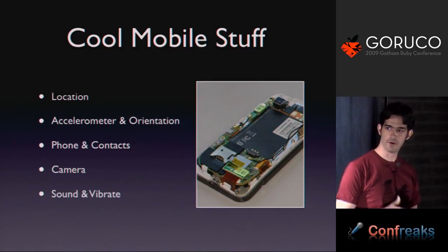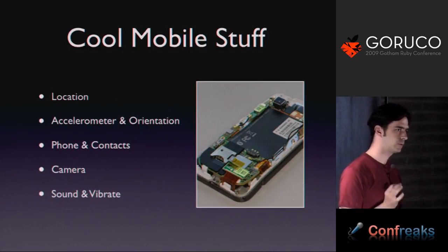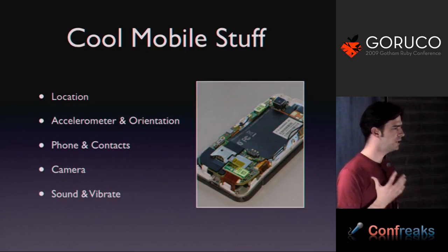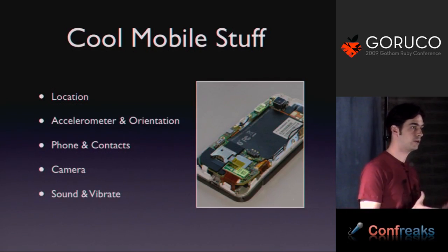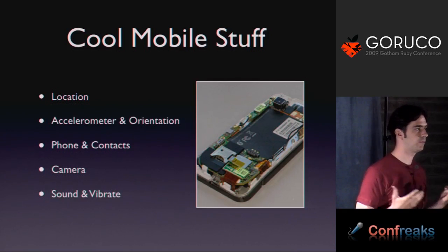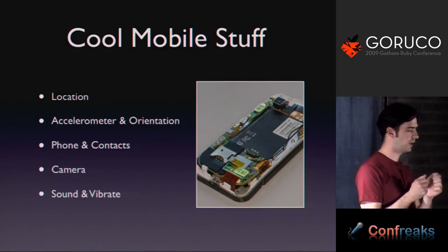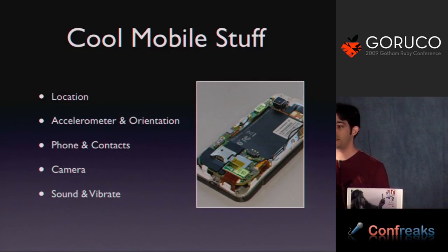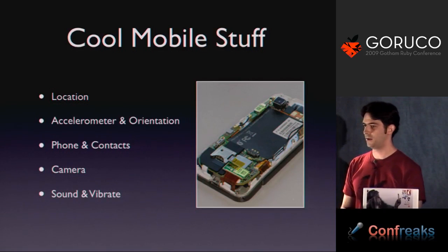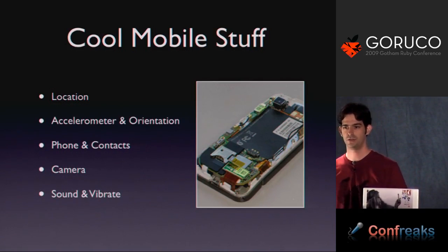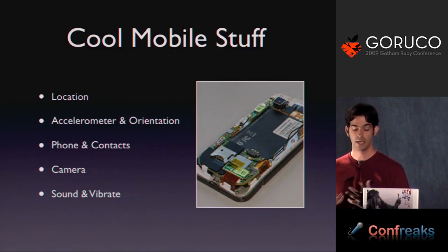So why mobile? Why is mobile cool? I'm sure you know this list, but it's worth thinking about what you can actually do once you have a phone that you can't do on your desktop or laptop. Location is probably the coolest thing — GPS, however you're going to find location. Accelerometer and orientation: your device knows where it is, knows its position in space. The phone itself — remember that the phone is the killer app for the phone. You can make phone calls, send text messages, and you have an address book. You actually have a multimodal communications device with you.